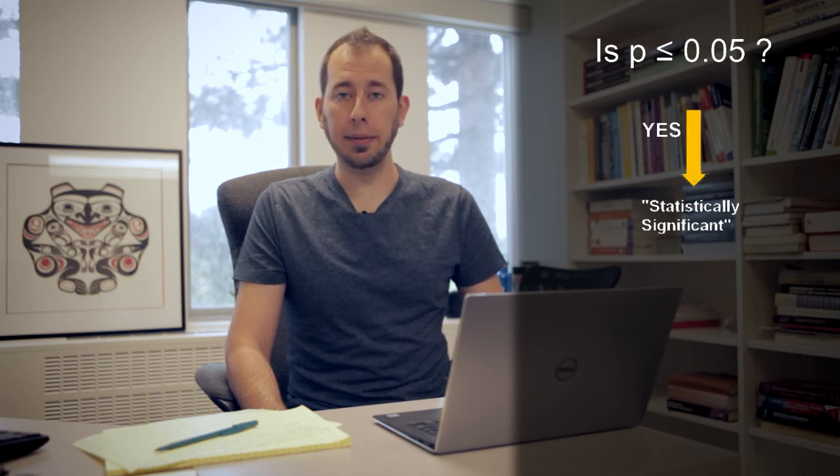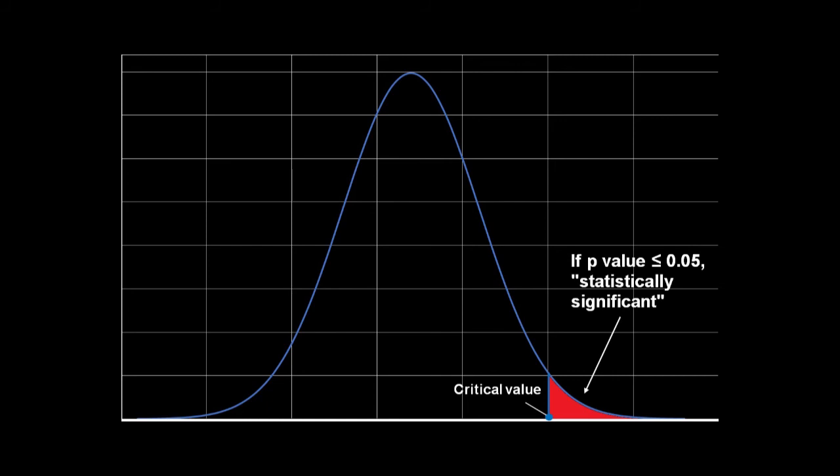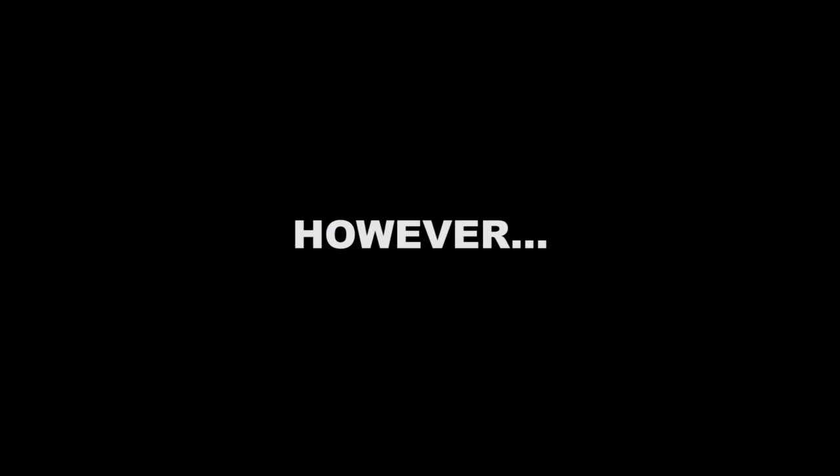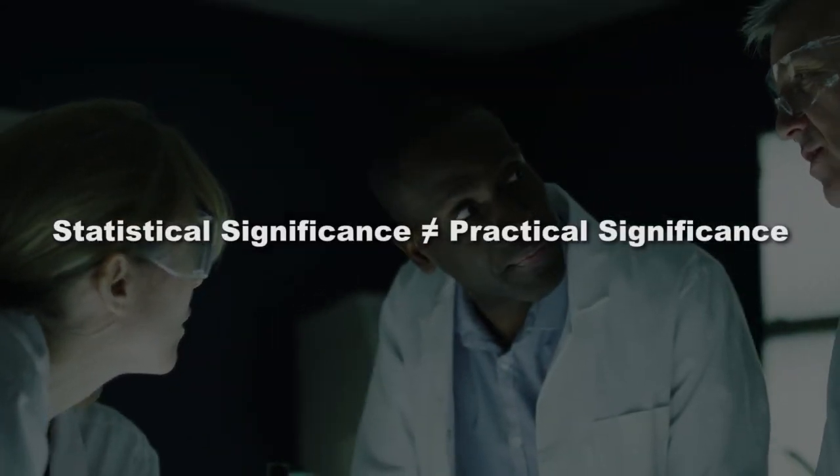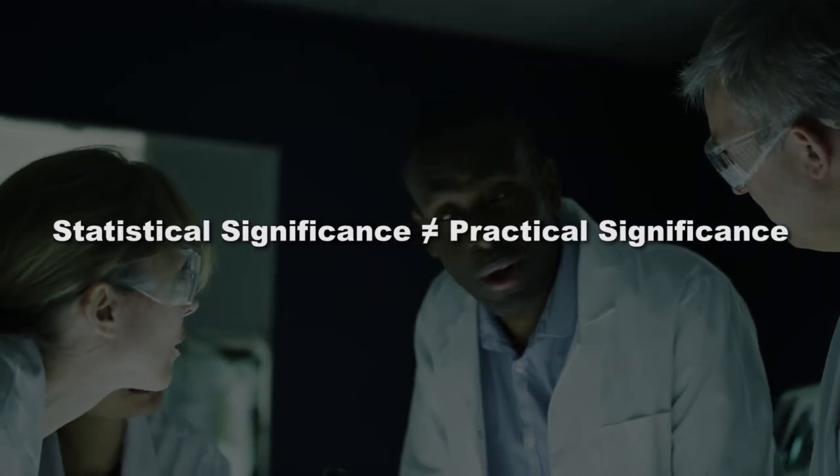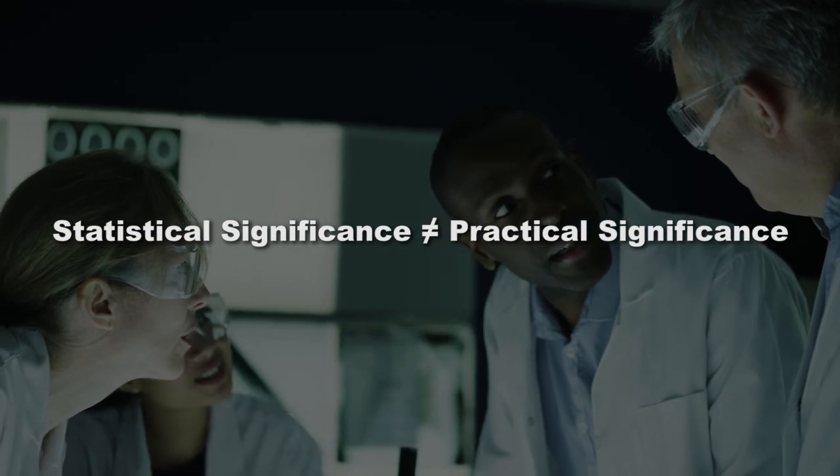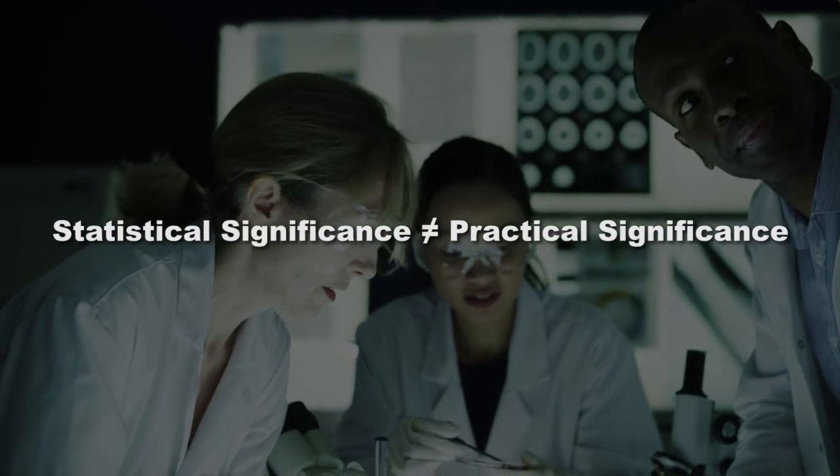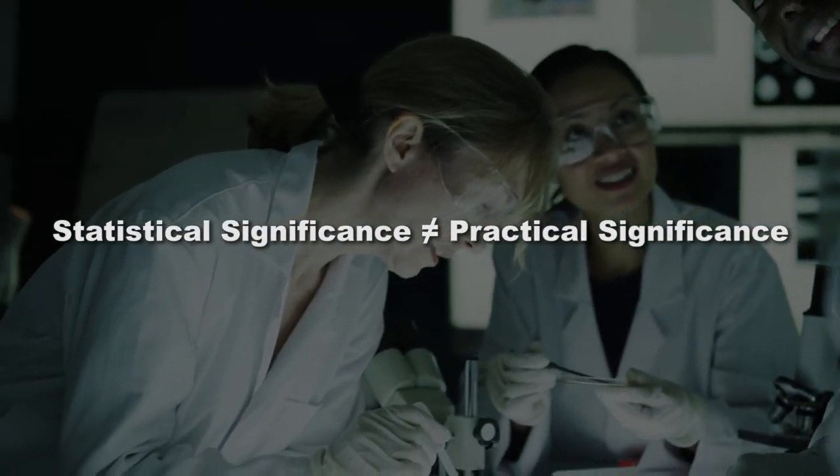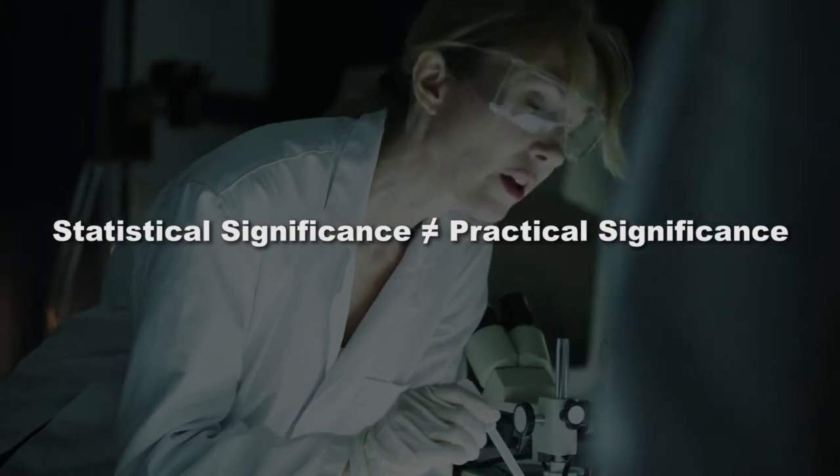If the p-value is below the 0.05 threshold, or in other cases a different cutoff point, statisticians call the finding statistically significant. This means that the relationship between two or more variables is not caused by chance. However, this does not necessarily mean that the finding has clinical or practical significance. That is, whether the findings are significant enough to have any real-world application. A new treatment could just clear the 0.05 statistical significance threshold, but if the number needed to treat, as we discussed before, was too large, it might not be a worthwhile treatment to have.